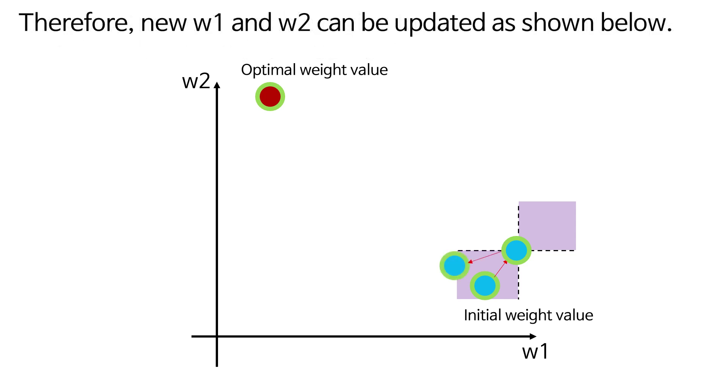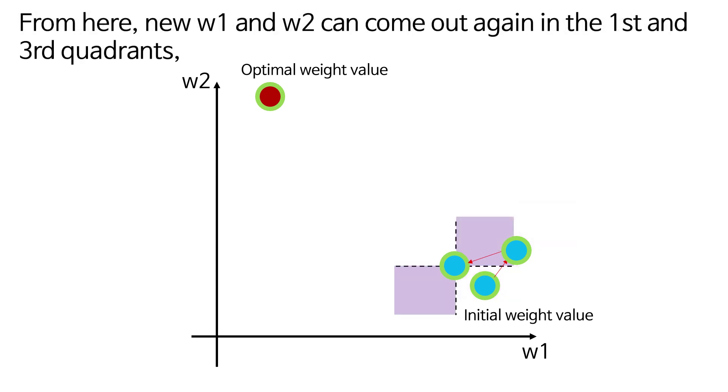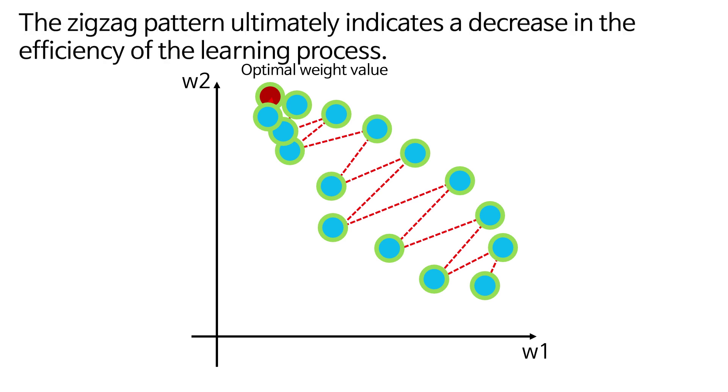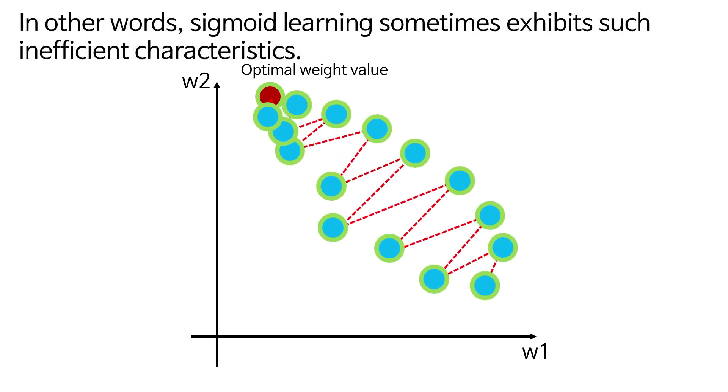Therefore, new W1 and W2 can be updated as shown below. From here, new W1 and W2 can come out again in the first and third quadrants, resulting in a zigzag pattern in the learning process. The zigzag pattern ultimately indicates a decrease in the efficiency of the learning process. In other words, sigmoid-based learning sometimes exhibits such inefficient characteristics.